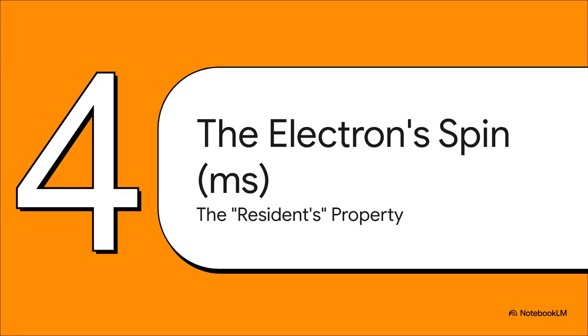The address is almost done, but what about the actual resident inside the house? Our last quantum number is totally different. It doesn't describe the house, or the orbital, at all. Instead, it describes a fundamental property of the electron itself.